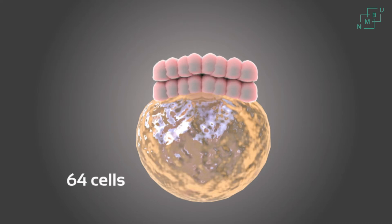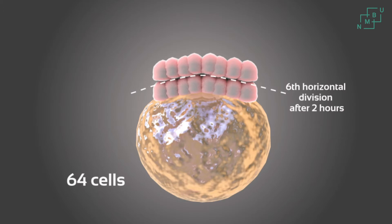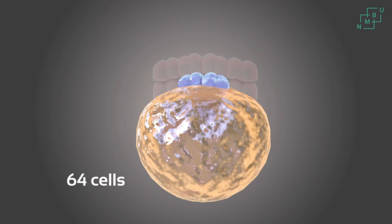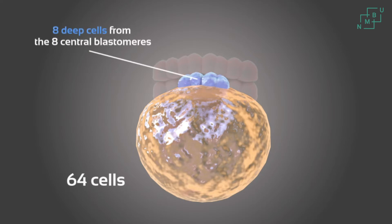The sixth division is the first that occurs in the horizontal plane, and after this division it is the first time that some cells are completely covered by other cells. These buried cells, or deep cells, arise from one of the two daughter cells of the central blastomeres present in the previous stage. The other daughter cells remain superficial in the top layer, in what is now the enveloping layer.